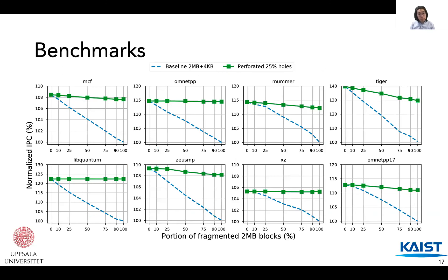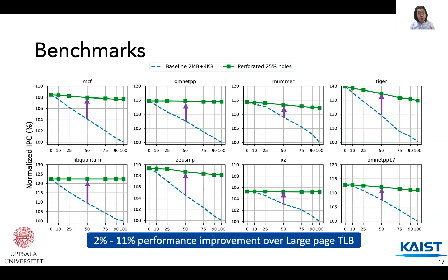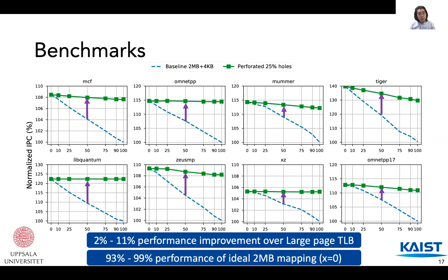For real-world benchmark results, perforated pages perform 2% to 11% better than the baseline large page TLB, and can retain 93% to 99% of the performance offered by the ideal large page mapping scenario. The Tiger benchmark sees a gradual drop in performance because more perforated pages results in more bitmaps and hole pages, putting more pressure on the TLB and resulting in more TLB misses.